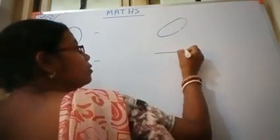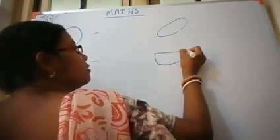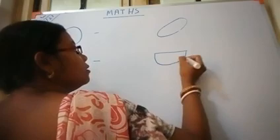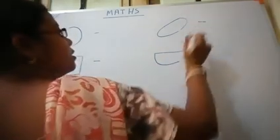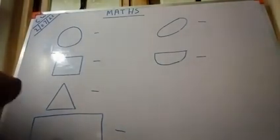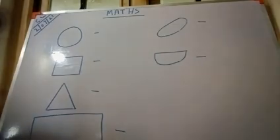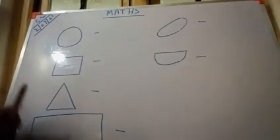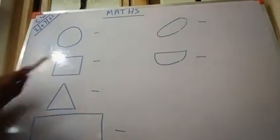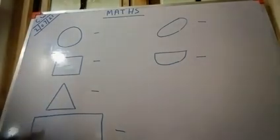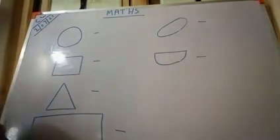In your book, this shape is given. This is semicircle, or half circle. So the shapes we have are: circle, square, triangle, rectangle, oval, and half circle or semicircle.